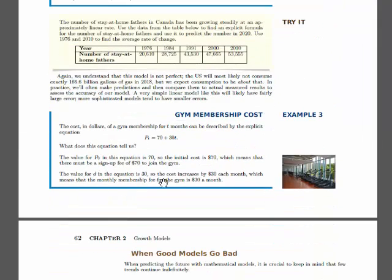And then there's just a simple example of interpreting a model, which is nothing more than just reading it off and recognizing that the 70 is the initial value and 30 is the growth rate.